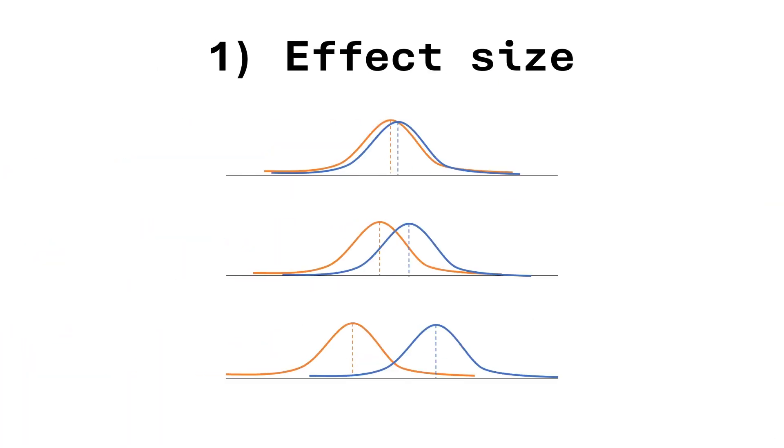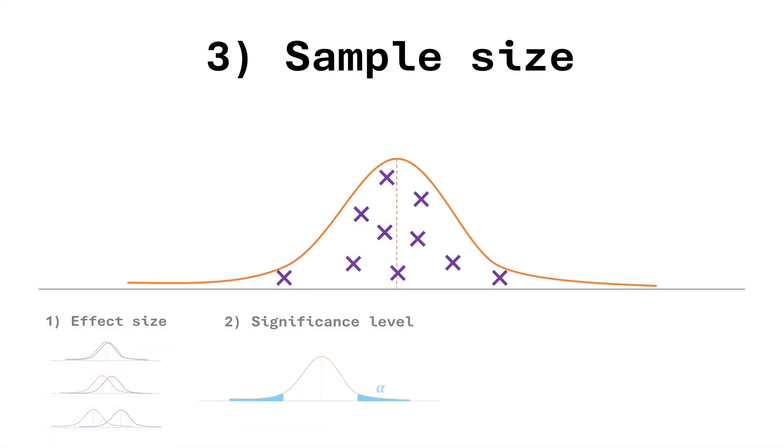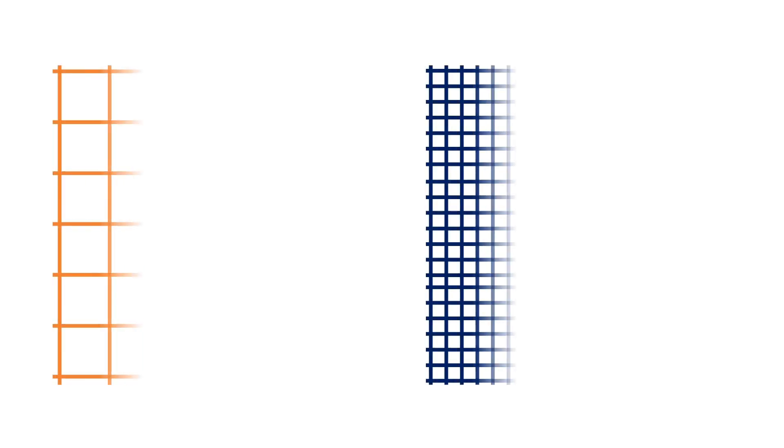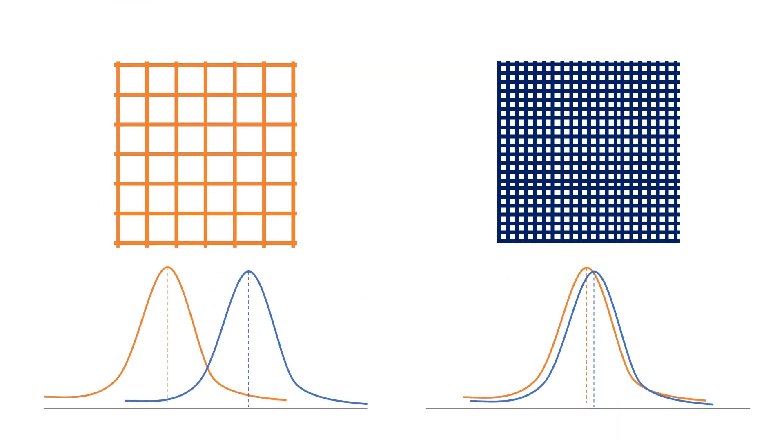Your power should be as high as possible. The power in your experimental design is influenced by the effect size — will an increase in temperature change the yield by 1% or 10%? — by the significance level, which is how sure you want to be that you're not making a type 1 error, and by the sample size. You can think of power like a fishing net. It is easier to produce a net with wide gaps but you can only catch large fish with it. The higher the power, the smaller the gaps — you can capture very small effects but you also have to do a lot of replicates.